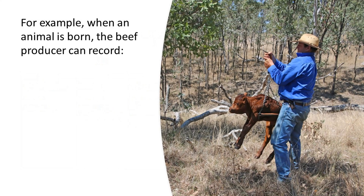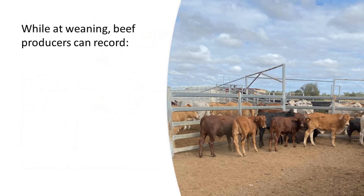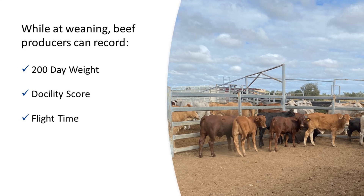For example, when an animal is born, the beef producer can record date of birth, birth weight, a calving difficulty score and, if an embryo transfer or ET calf, the recipient dam details. While at weaning, beef producers can record a 200-day weight and a temperament score, either a docility score or flight time on their weaners and a mature cow weight on the weaners' dams.